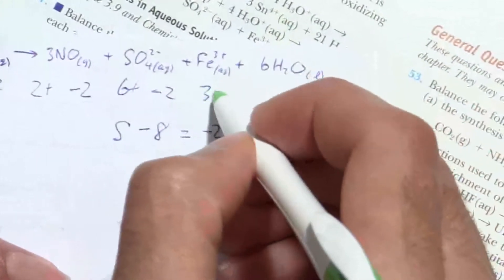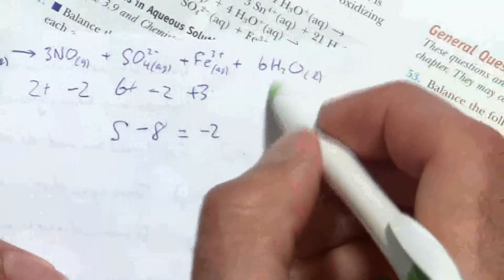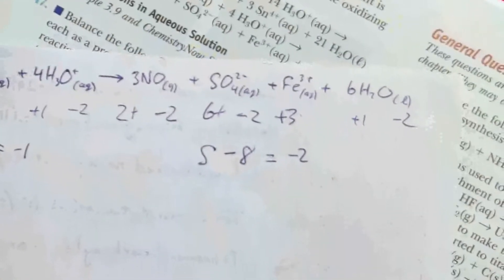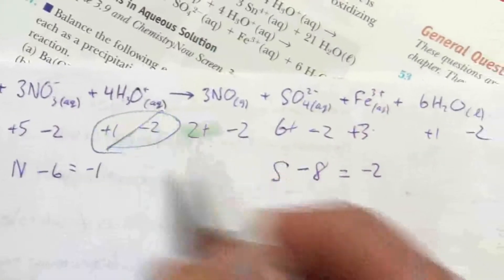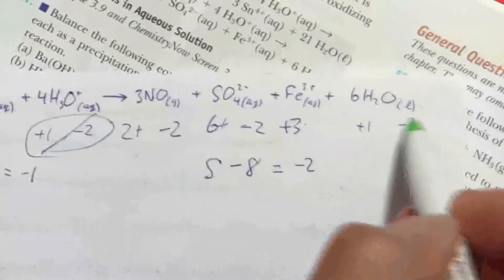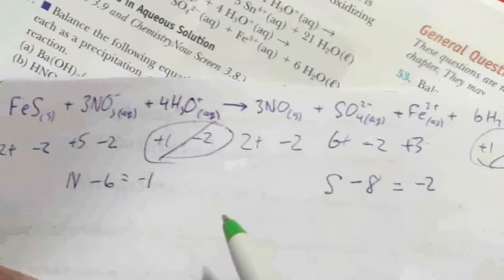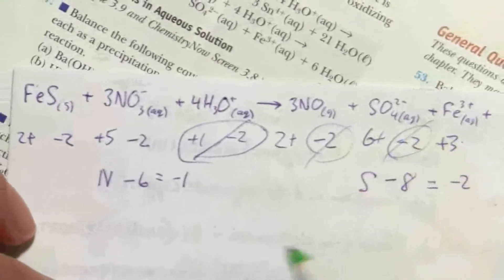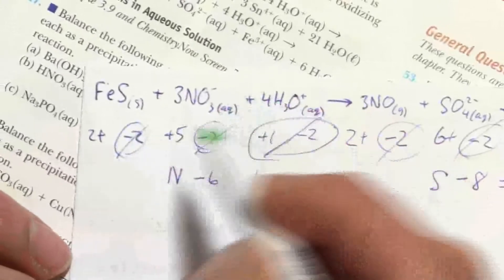Here, that one's pretty straightforward. I have positive three for the iron, and then the positive one and the minus two for the water. So, like before, hydrogen and oxygen, we can rule out. Let's look at these other ones. This is oxygen. I don't have to worry about those.